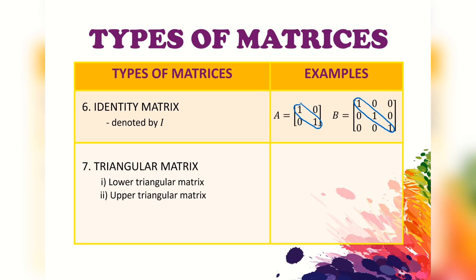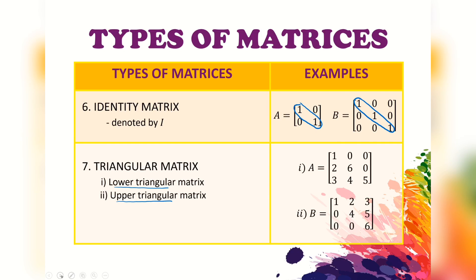Lastly, there are two types of triangular matrix: the lower triangular matrix and the upper triangular matrix. Matrix A is an example of a lower triangular matrix, where the entries above the main diagonal are all zero. Matrix B is an example of an upper triangular matrix, where the entries below the main diagonal are all zero.